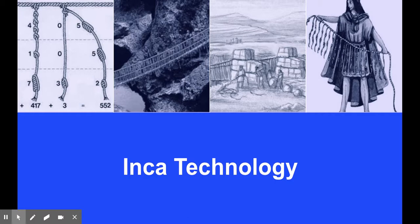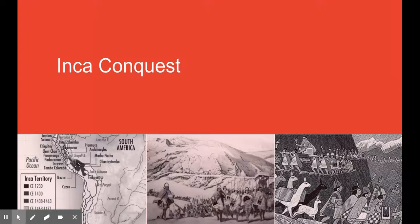The Inca used technology and math in every part of the government. To keep track of statistics, the Inca used a quipu. A quipu was a string of knots which was easy to transfer and could record decimals up to 10,000. The official language of the Inca is called Quechua, and all official business was done in that language. The Inca also made almost 25,000 miles of roads.